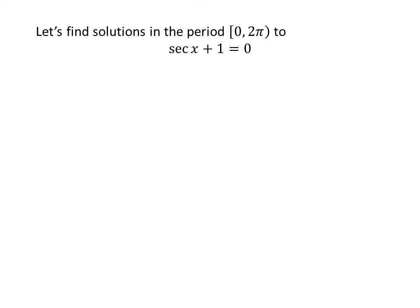Let us first find the solutions to the equation secant of x plus 1 is equal to 0 in the period 0 to 2π, as secant is a periodic function with period 2π. Taking 1 from the left hand side to the right hand side gives us secant of x is equal to minus 1. We know the value of secant of π is minus 1.